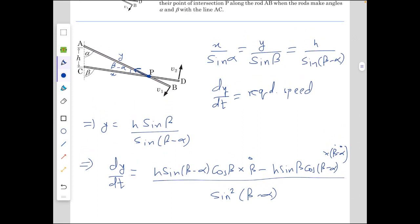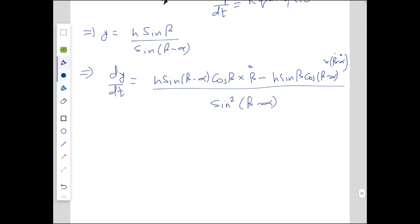From here we can notice that alpha dot is nothing but minus v1 over L, and beta dot is plus v2 over L. So substituting them here we get h over L.